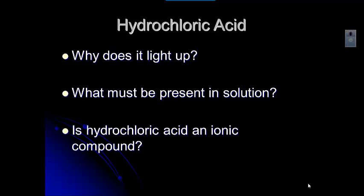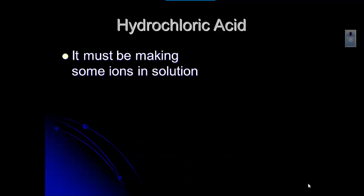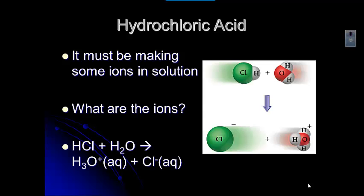Even though hydrochloric acid is not an ionic compound, it's in that small subset of covalent compounds. When we did the types of bonding lab you saw this with aspirin — aspirin was a weak conductor of electricity, and remember that the chemical name for aspirin is acetylsalicylic acid. What happens with compounds like this is they make ions in solution. With HCl, the ion you probably recognize is chloride, so the other ion must be the H+ ion.